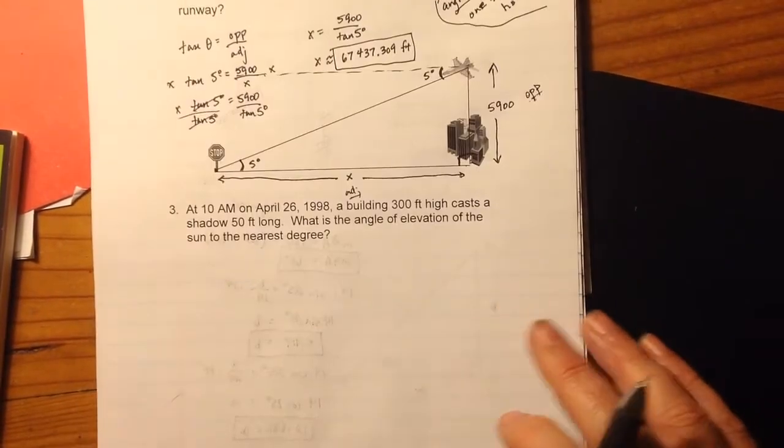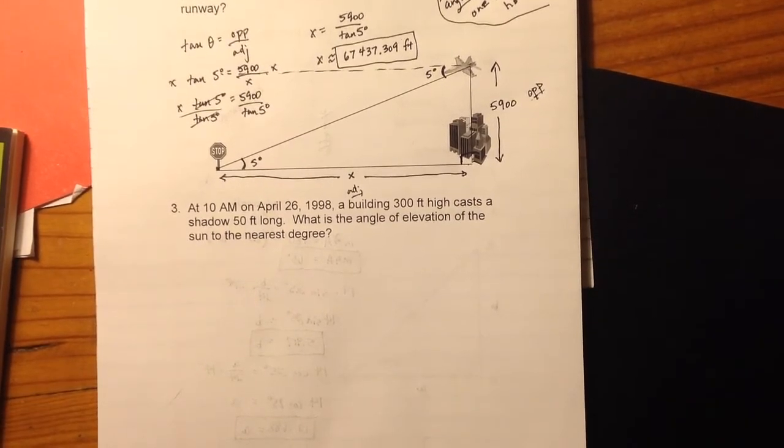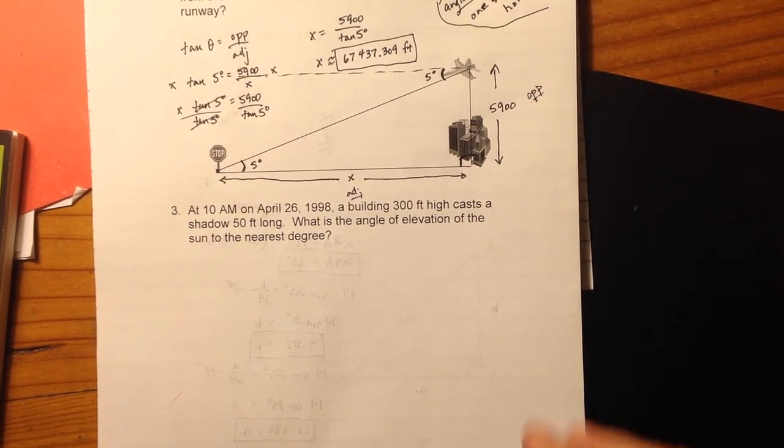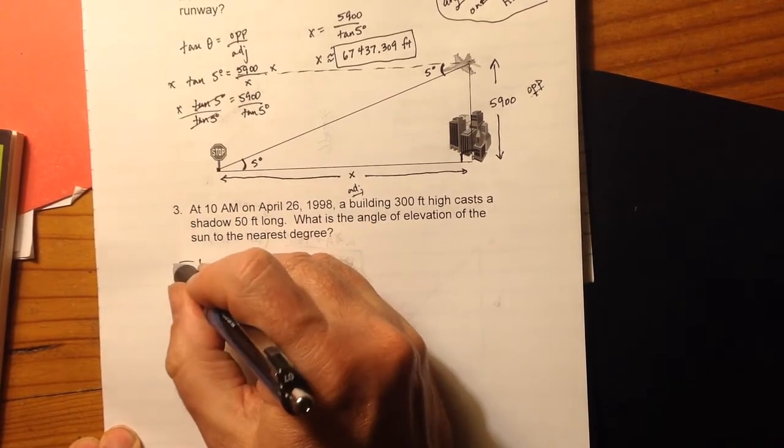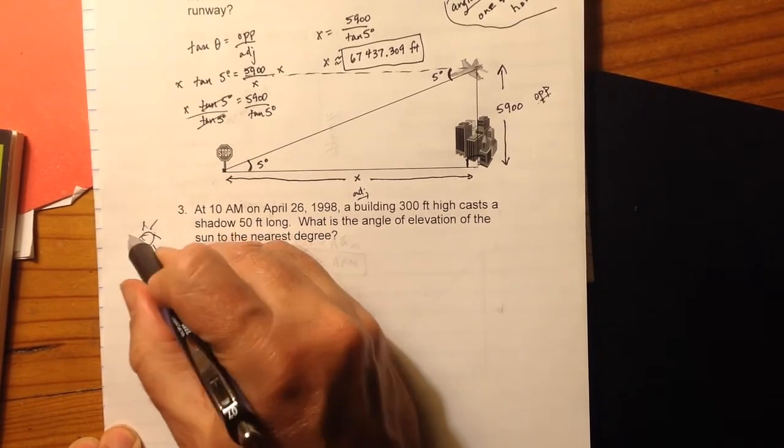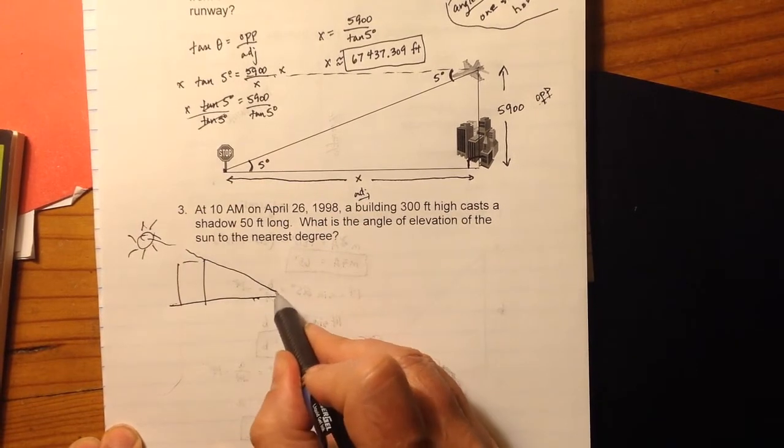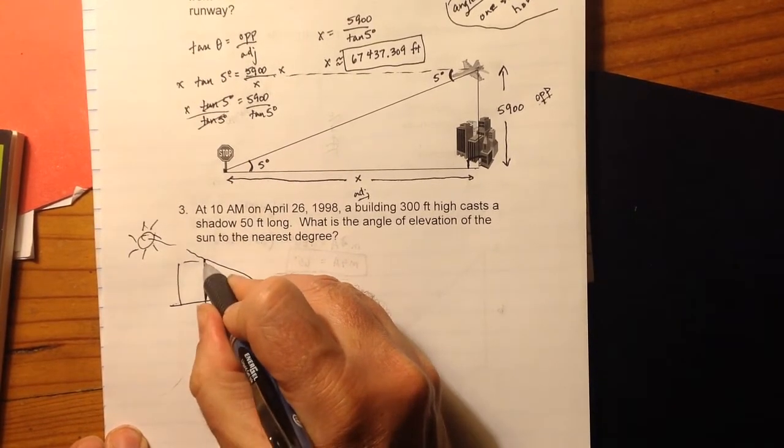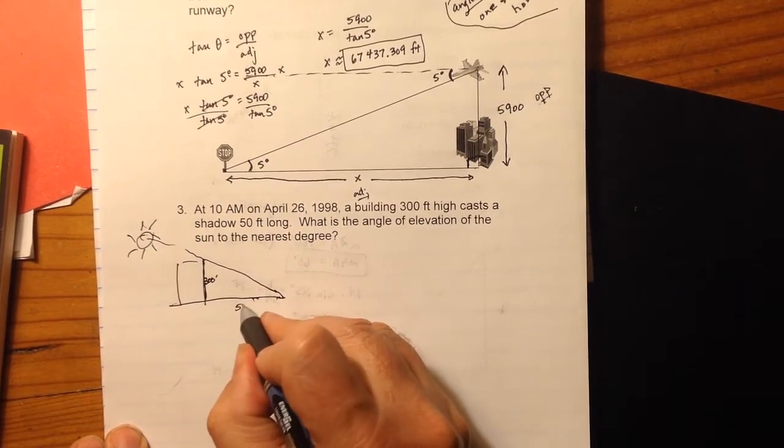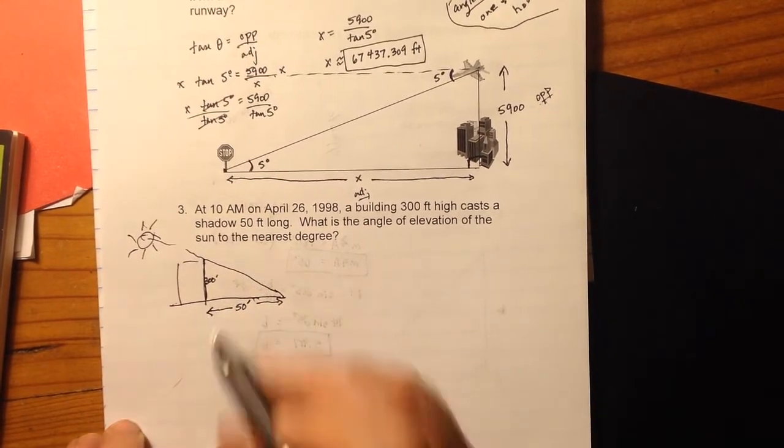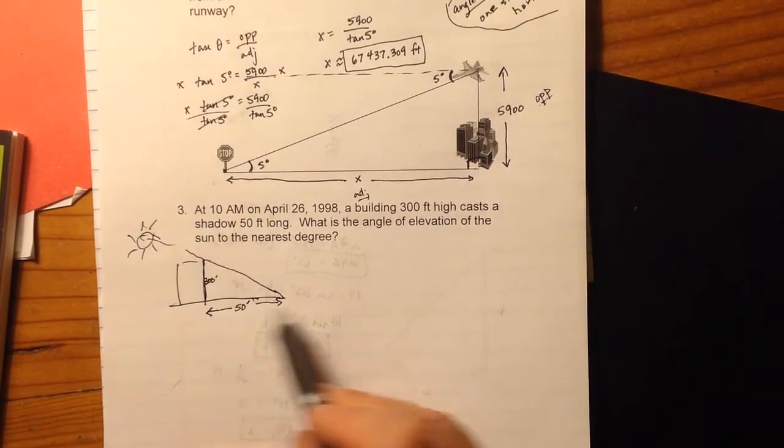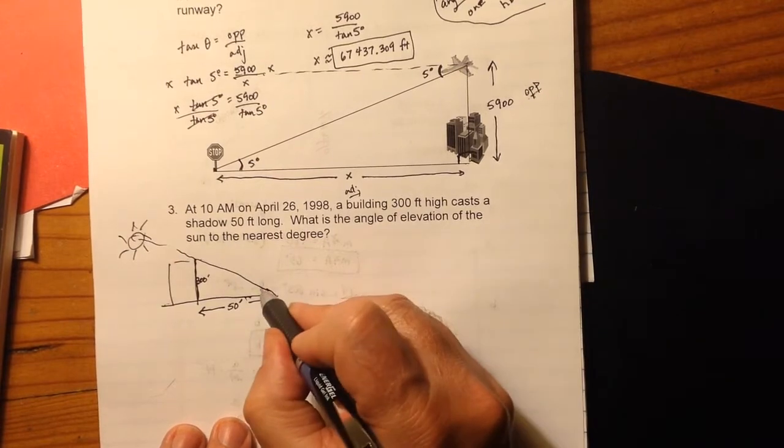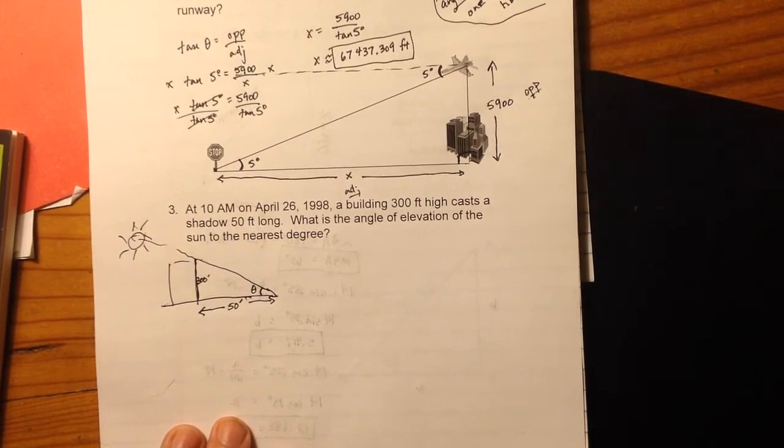Let's look at number three. Last problem. This one does not have a picture. At 10 AM on April 26, 1998, a building 300 feet high casts a shadow 50 feet long. What is the angle of elevation of the sun to the nearest degree? So I've got some building here. And let's put my sun up here. And so the sun is casting a shadow here. The building is 300 feet high. So this side is 300 feet. 50 feet long, this is my shadow. So remember that shadows always lie on the ground. They never float in the air. The shadow is on the ground, not in the air. And I'm looking for the angle of elevation. Like I said above, angle of elevation one side has to be horizontal. So this would be my angle of elevation. I'm just going to call that theta.